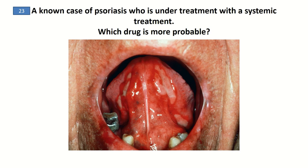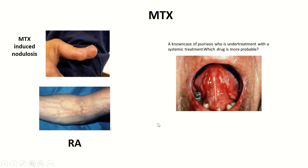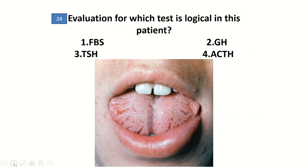A well-known case of psoriasis taking some drug comes in with mucositis and ulcer-like lesions. The most probable drug here is methotrexate. Methotrexate can cause skin findings in dermatological disease, including mucositis in psoriasis and inducing nodulosis or prominent vessels in the background of rheumatoid arthritis.